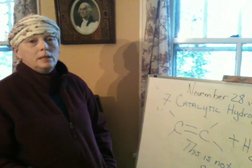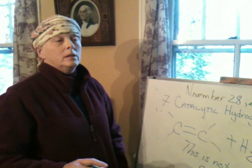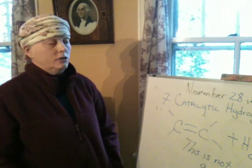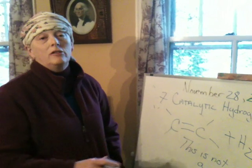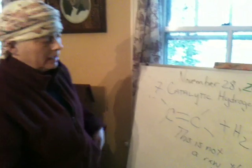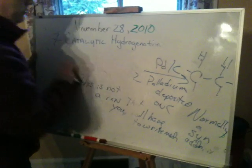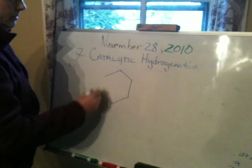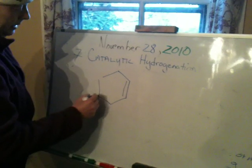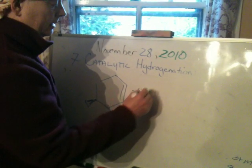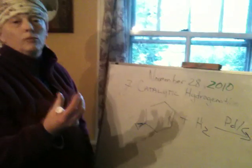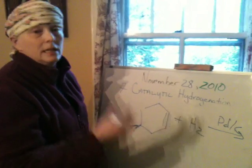You don't have to know oxymercuration and demercuration. You don't have to know the addition of diborane, which is a rather complicated mechanism followed by oxidation. And you don't need to know the mechanism of this reaction, although I think you should watch the movie, and I'm going to describe it briefly here. This is normally a syn addition, which is of some use to you in terms of stereochemistry. For example, if you had this molecule — and I'm putting a marker on it just to make the two faces different — and you added H2 in the presence of palladium on carbon.